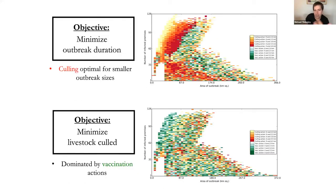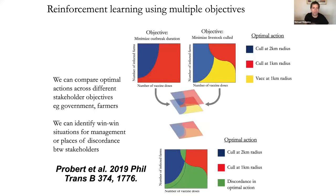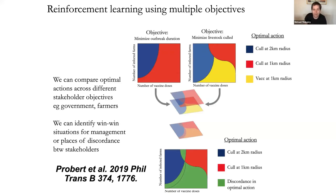With reinforcement learning we can compare multiple objectives — we can map decision spaces for outbreak duration and livestock culled across each other, and determine whether there are win-win scenarios where regardless of your objective you get the same policy being optimal. And there might be regions where your objective determines what your optimal policy is — some discordance. That's a simple example for foot-and-mouth disease.